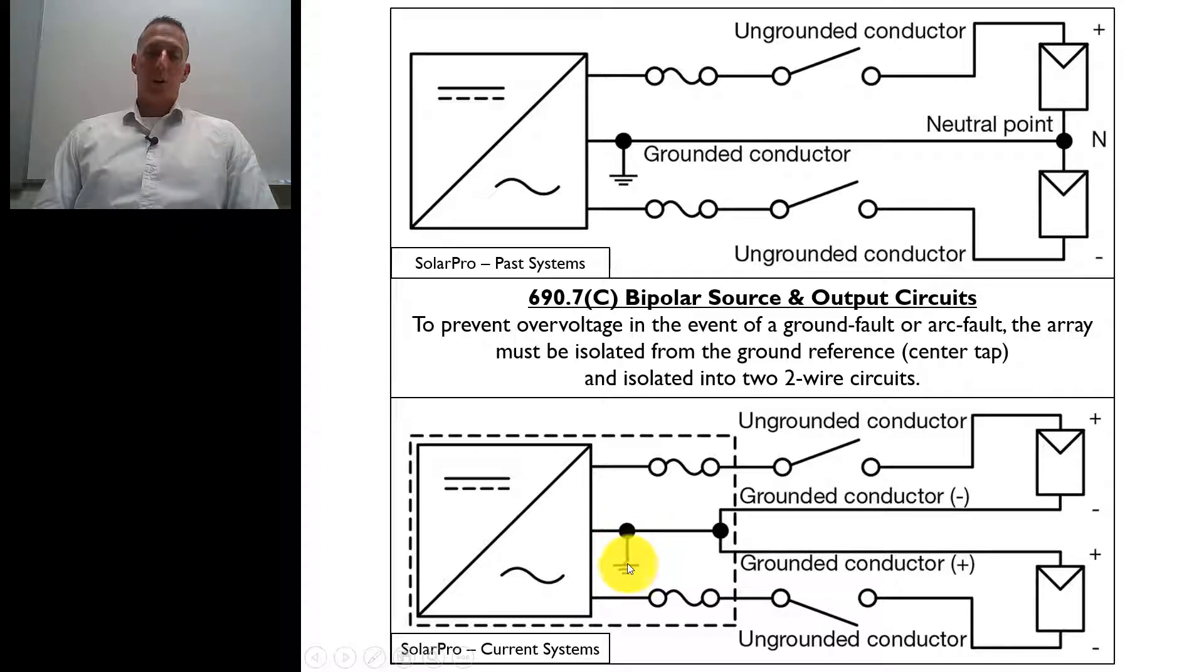We have the grounding electrode, the grounding electrode conductor. We're tying all those grounded conductors together here, have our fusing, and you can see this dashed line. They're indicating that the dashed line is basically everything contained within the inverter enclosure.